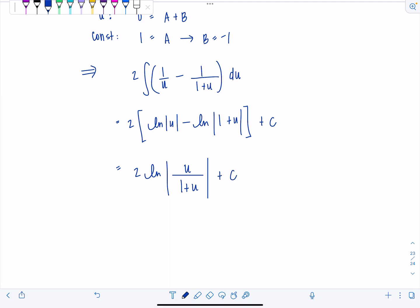And no, we're not done. Remember, we made a change of variables. The original integral was all in terms of x's, and we had let u equal radical x. So now we have 2 natural log absolute value radical x over 1 plus radical x plus c.